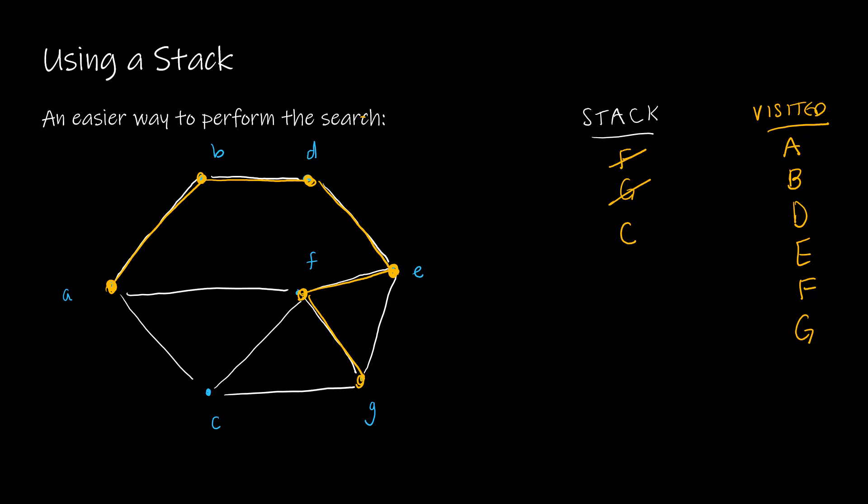From F and then from G over to C. So now I have visited all of the vertices. What does my spanning tree look like?